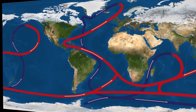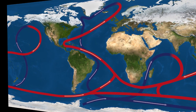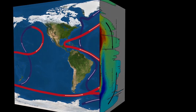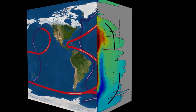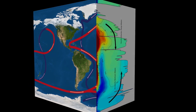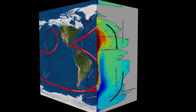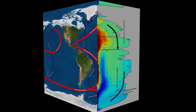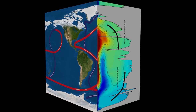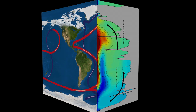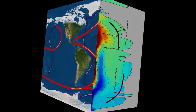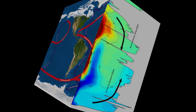If we take a transect over the Atlantic Ocean, we can see the formation of the deep and intermediate waters. The deepest water masses are the Antarctic bottom water, which is formed in the Weddell Sea, and the North Atlantic deep water, which is formed in the Labrador,